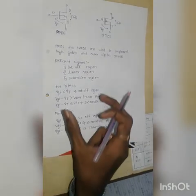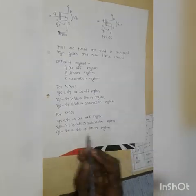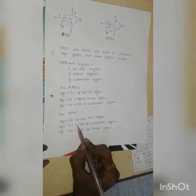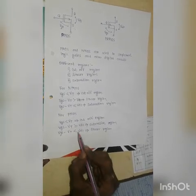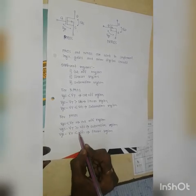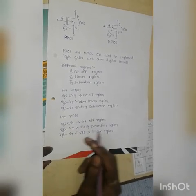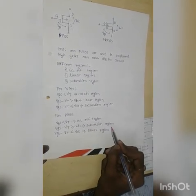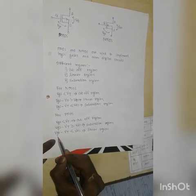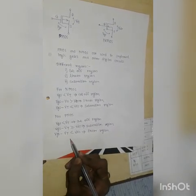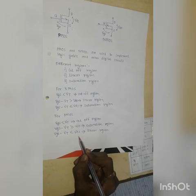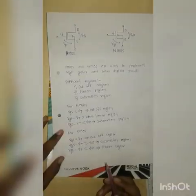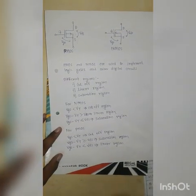For PMOS, if VGS is less than VT, the transistor operates in the cutoff region, same as NMOS. But for PMOS, if VGS minus VT is greater than or equal to VDS, then the PMOS transistor operates in the saturation region. If VGS minus VT is less than VDS, then PMOS operates in the linear region.